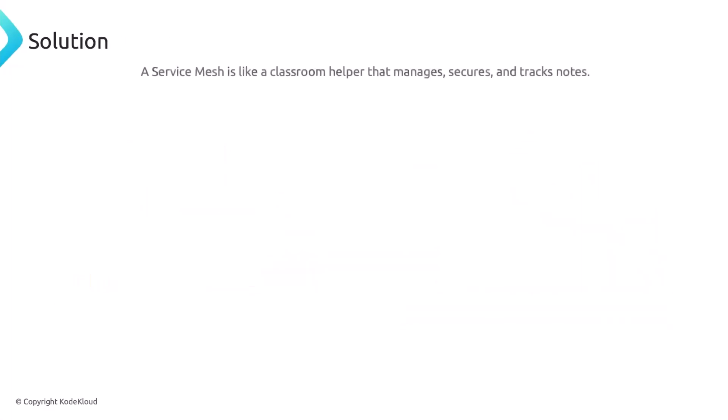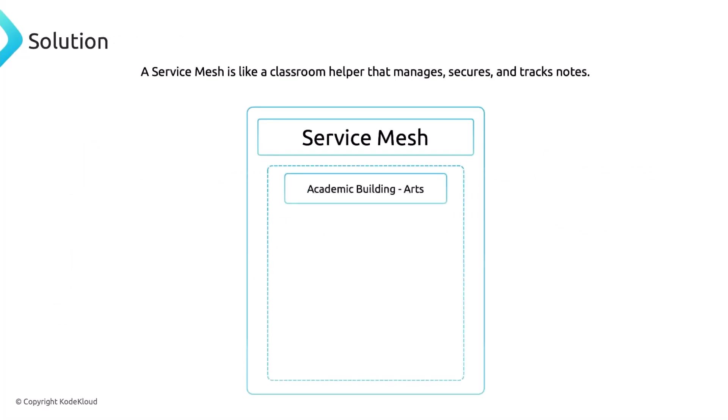The solution? A service mesh. A service mesh is like a classroom assistant that will organize, secure, and track the notes being passed around the class. It ensures that the communication goes through smoothly without issues. If student A, for example, wants to send a note to student C, student A passes it to the assistant who will ensure the note gets to student B — and because the assistant is handling it, no one else is going to read that message.